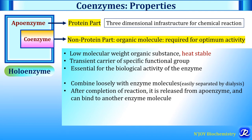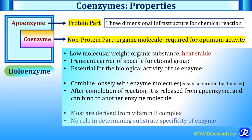The coenzyme combines loosely with the enzyme molecule and is easily separated by dialysis. So coenzyme is a non-protein, low molecular weight, heat stable, organic, dialyzable molecule required for optimum activity of the enzyme. After completion of the reaction, the coenzyme is released from apoenzyme and can bind to another enzyme molecule. Most coenzymes are derived from vitamin B complex and have no role in determining substrate specificity of the enzyme, as it is the apoenzyme that is responsible for substrate specificity.